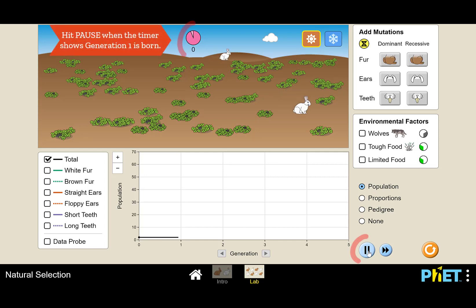All right, hit pause. Now we see on the screen the parents and that first generation of rabbits. And right now they are all white with short ears and short teeth. And we are going to introduce the new trait in the second generation. So we're going to let these rabbits have babies.